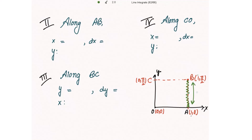Along AB, x is constant at x equal to 1, so dx is 0. At point A, y is 0, and at point B, y is π/2, so y varies from 0 to π/2.